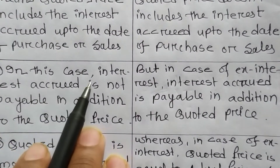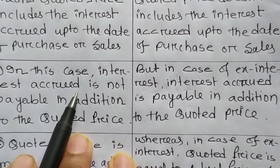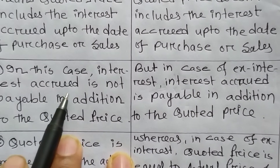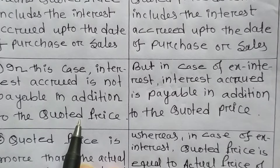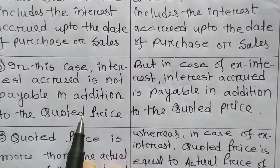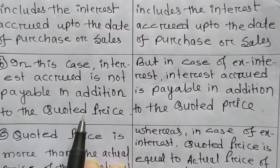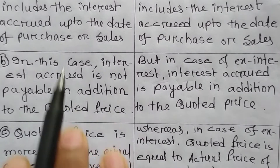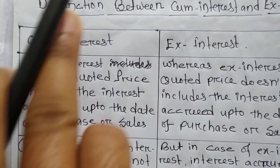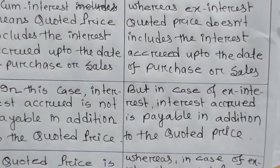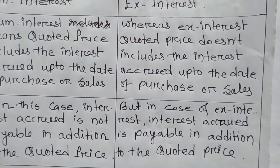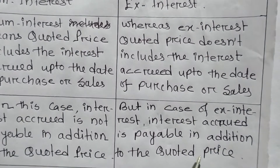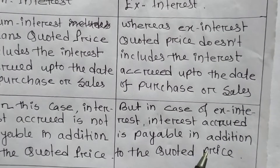Under cum interest, the interest accrued is not payable in addition to the quoted price — we are not paying anything extra as interest accrued. But in the case of ex interest, we have to pay the interest accrued in addition to the quoted price.